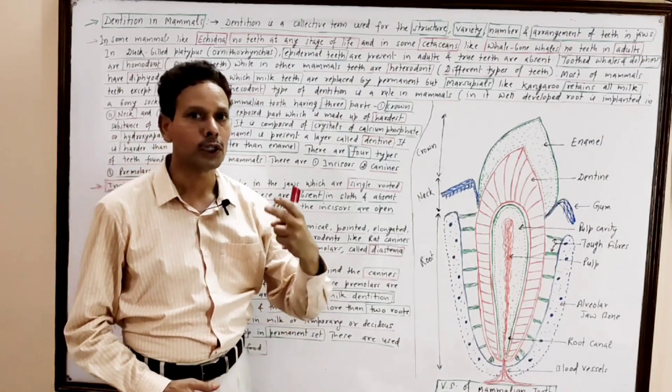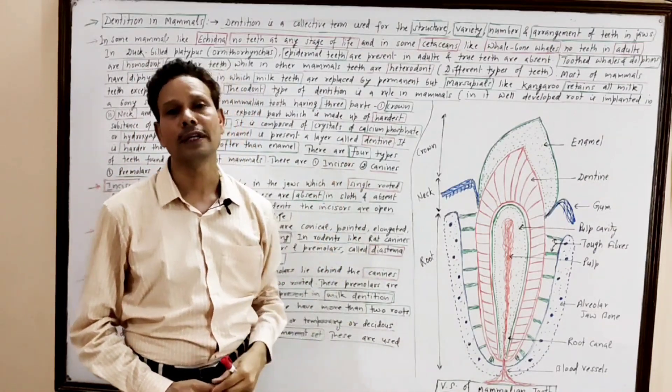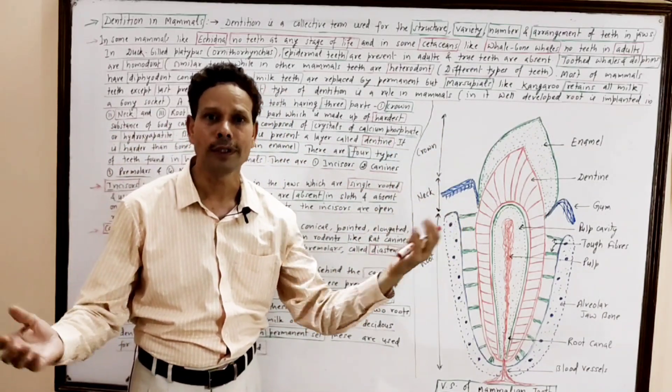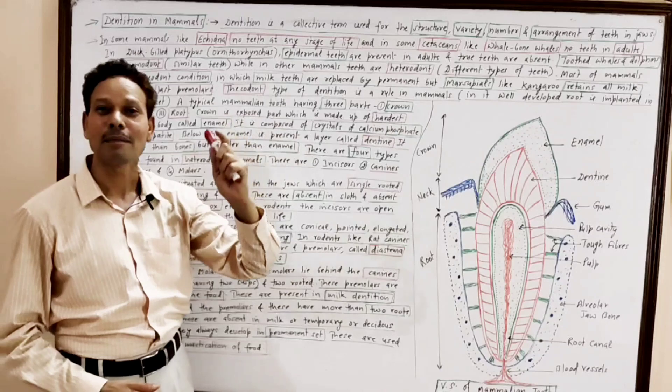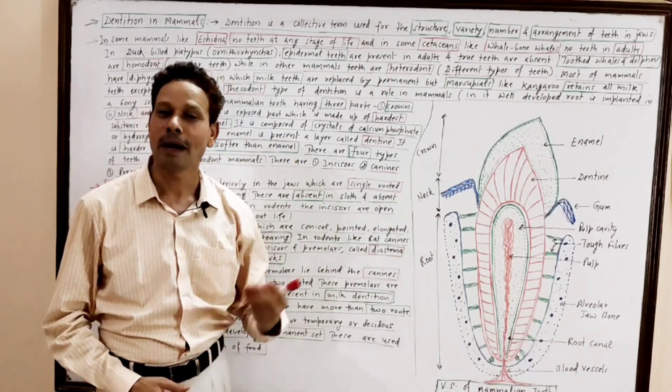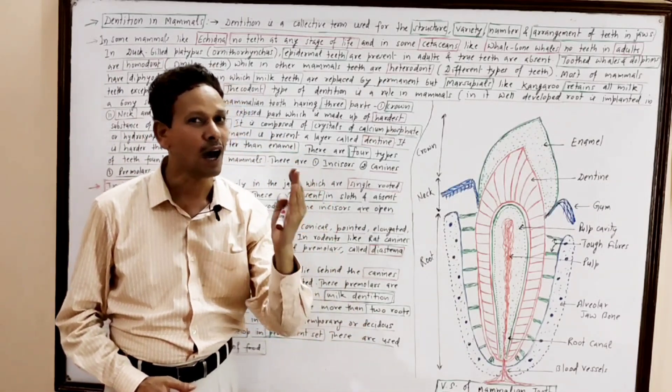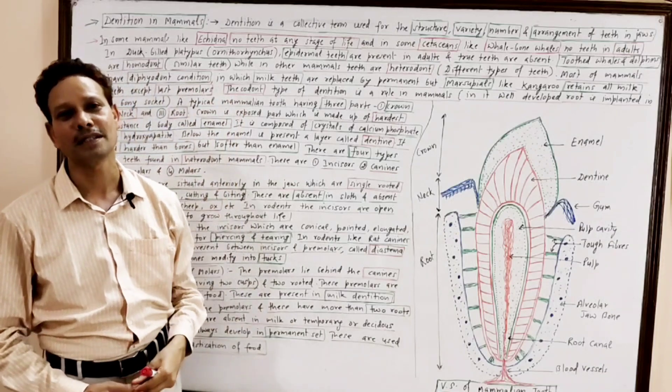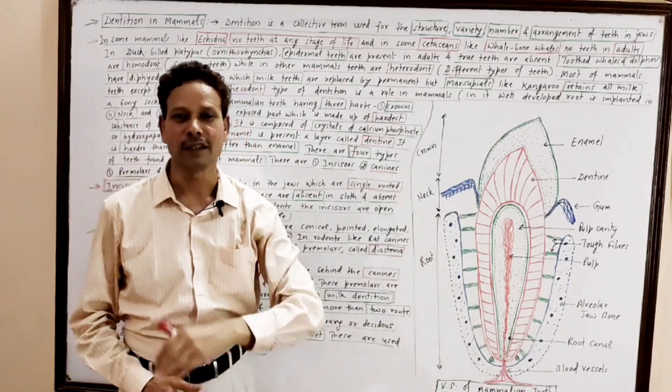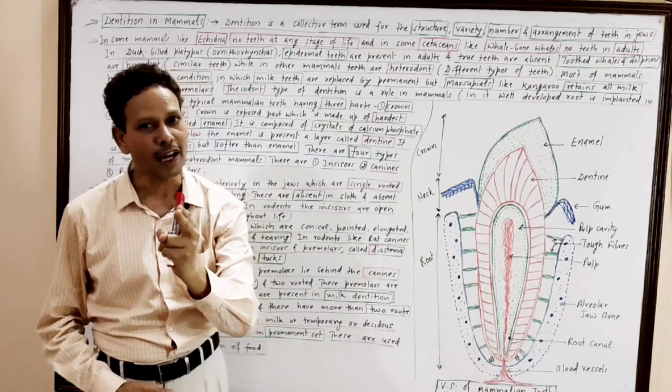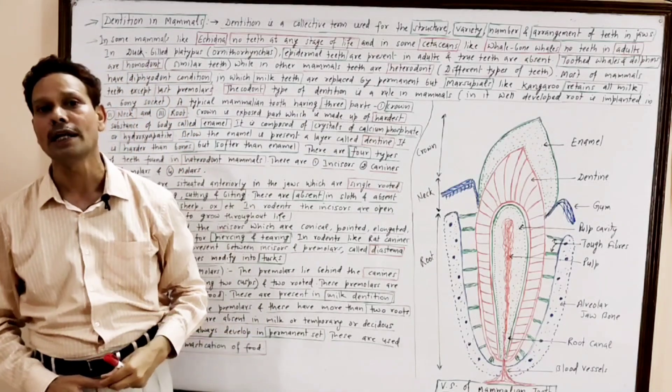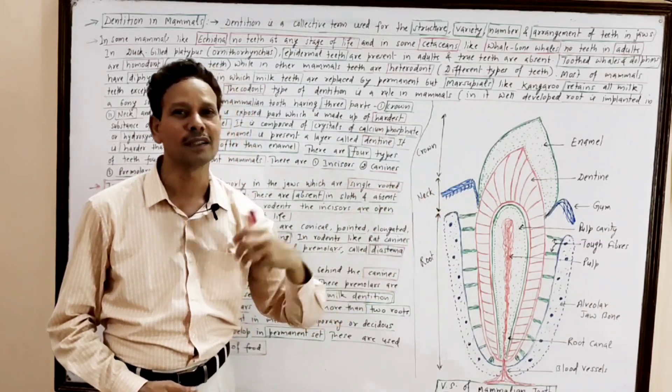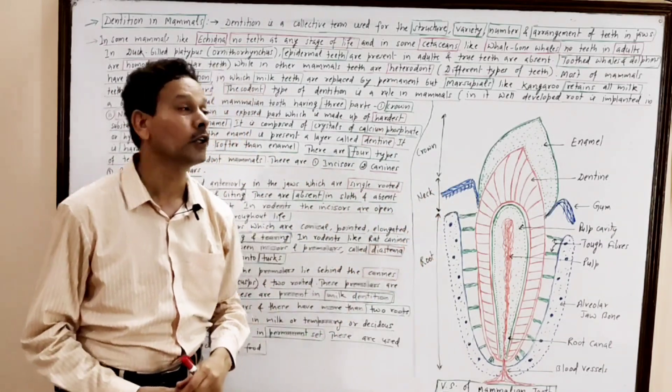In toothed whales and dolphins, all teeth are similar, identical. These are homodont. But in case of mammals, that is a characteristic feature of mammals, the teeth are heterodont. The teeth are of different type. As in case of human beings, four types of teeth: incisors, canines, premolars and molars. It means in case of mammals having different types of teeth, called heterodont, heterodentition.